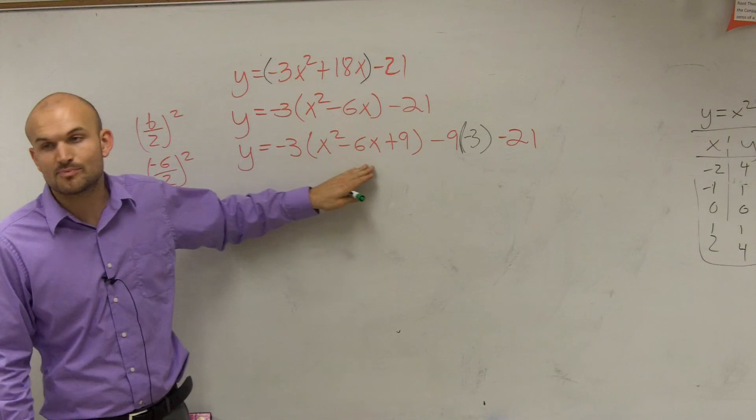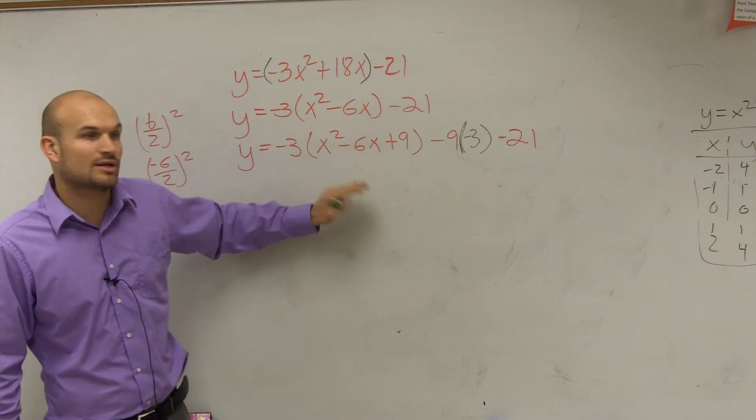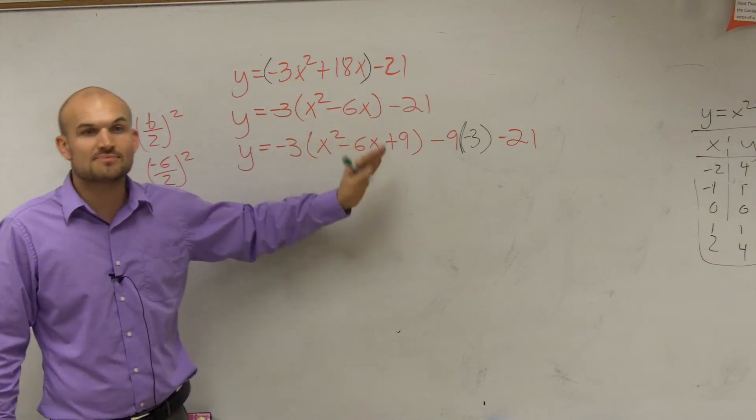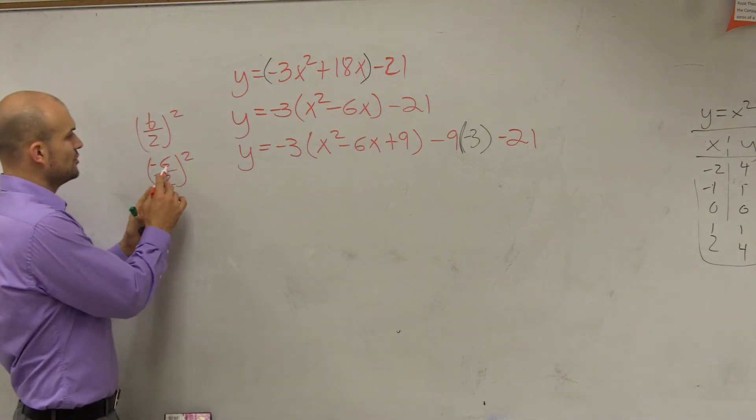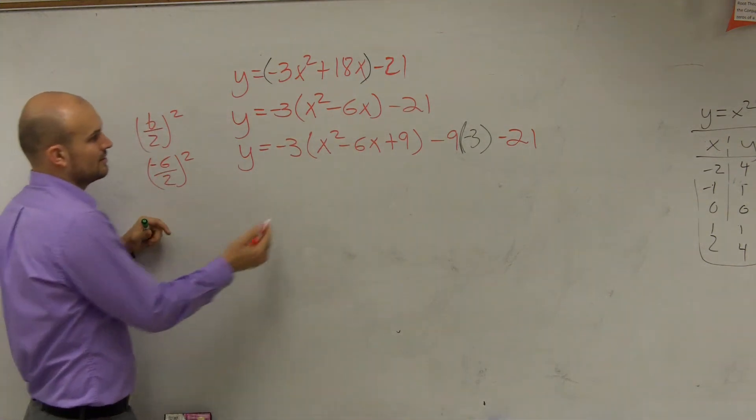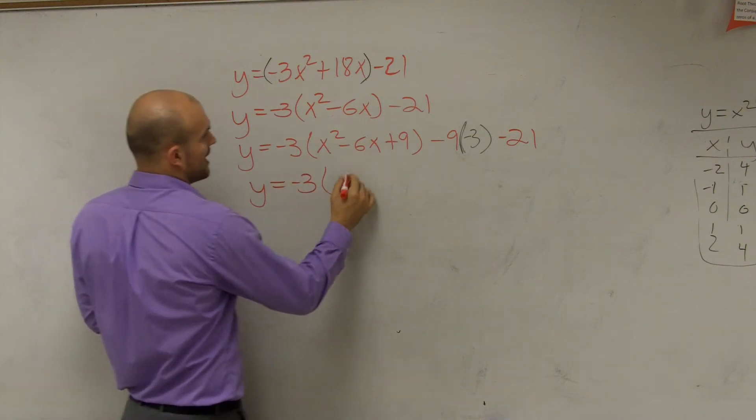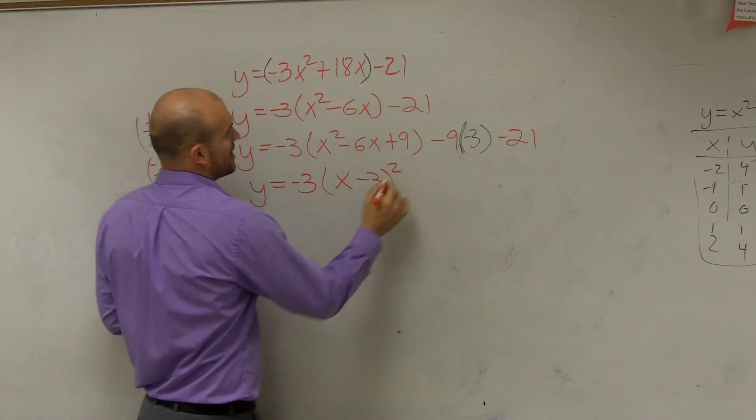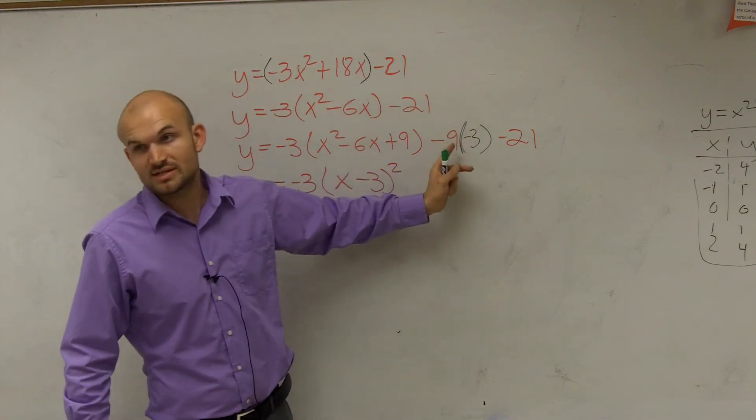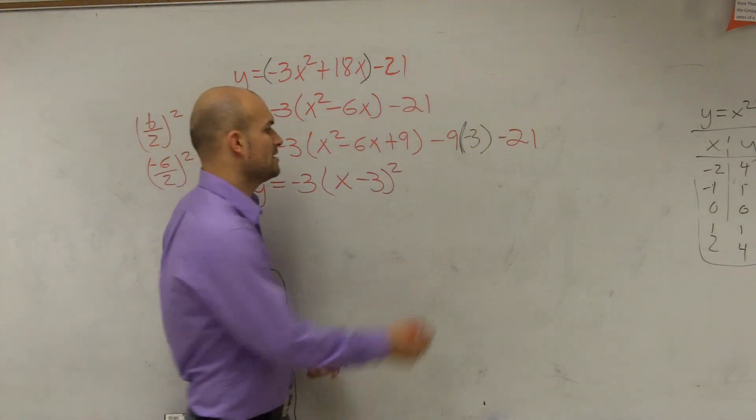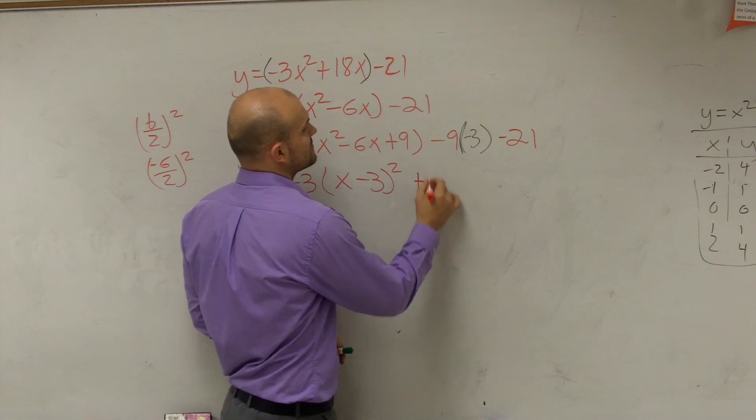Now we write this as a perfect square. Remember, if we can't rewrite that as a perfect square, we can always write it as x plus b over 2. b over 2 was negative 3. So therefore, I have y equals negative 3 x minus 3 squared. Negative 9 times 3 is a positive 27. Positive 27 minus 21 is a positive 6.